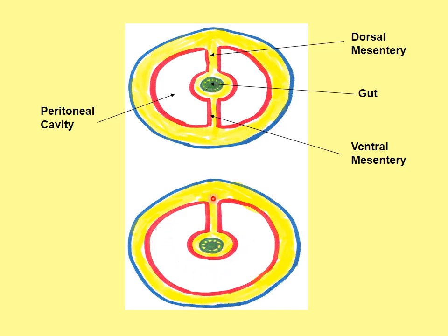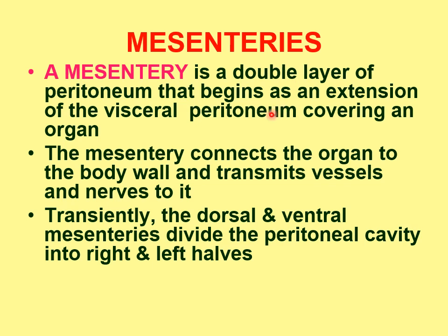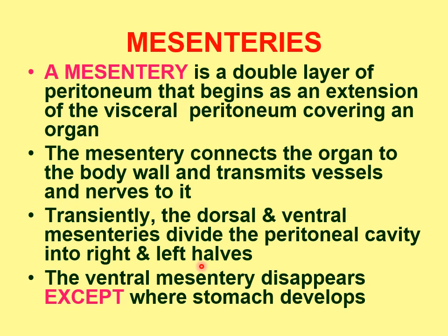By definition, the mesentery is a double layer of peritoneum that begins as an extension of visceral peritoneum covering the gut tube, connecting organs to the body wall and transmitting vessels and nerves. The dorsal and ventral mesenteries originally divide the cavity into right and left peritoneal halves, but the ventral mesentery disappears except at the area of the caudal foregut — the region of stomach and proximal duodenum development.